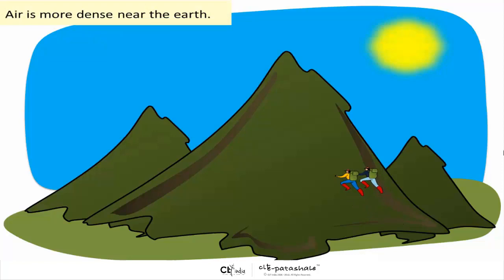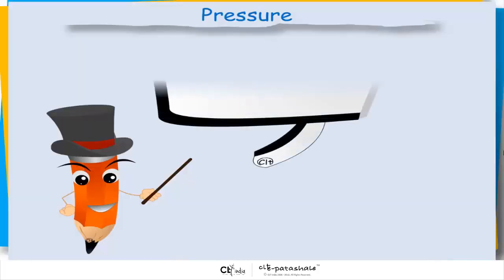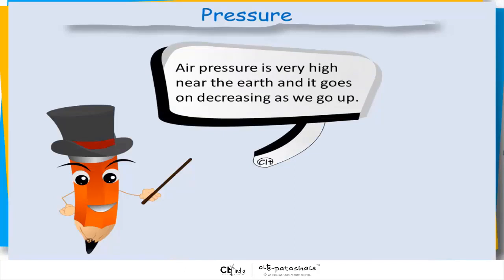Air is more dense near the earth. It goes on thinning out as we go up. Same is true of the air pressure. So as we go up, the air pressure also reduces. Air pressure is very high near the earth and it goes on decreasing as we go up.